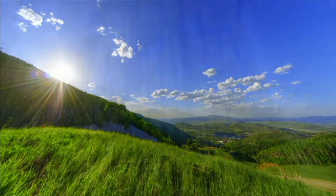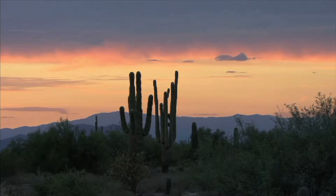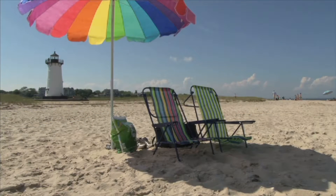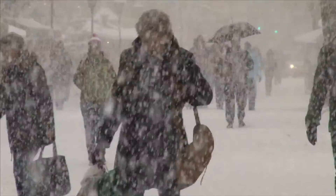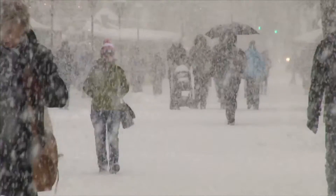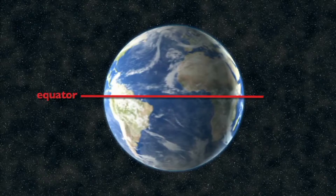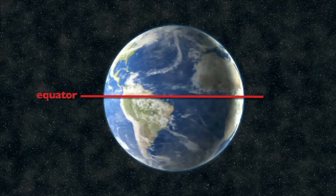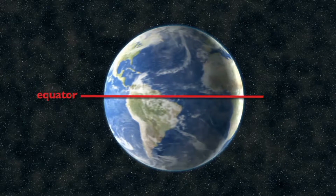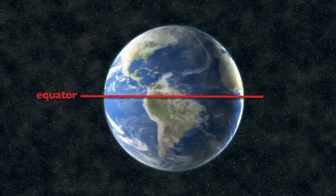Different parts of Earth experience different lengths of daylight throughout the year. The length of daylight changes depending on where you live on Earth and where the tilted Earth is in its orbit. The equator, or the imaginary line that circles the Earth around its middle, experiences nearly 12 hours of daylight and 12 hours of darkness year-round — an even split.